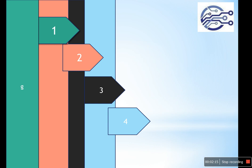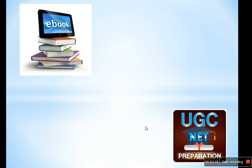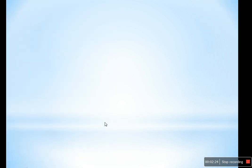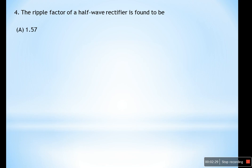Question number four: The ripple factor of a half wave rectifier is — (A) 1.57, (B) 1.21, (C) 1.12, or (D) 1.41. Generally, rectifiers are devices used to convert the AC signal into a DC signal.